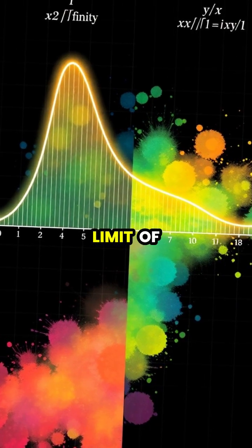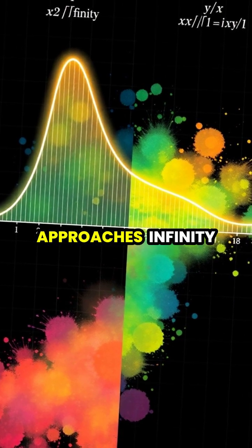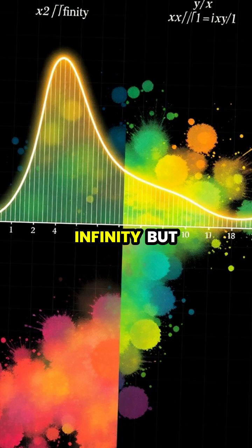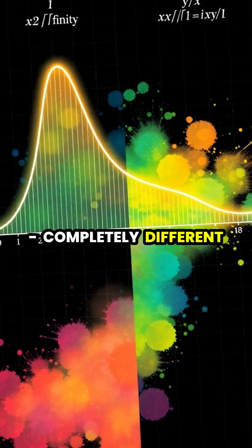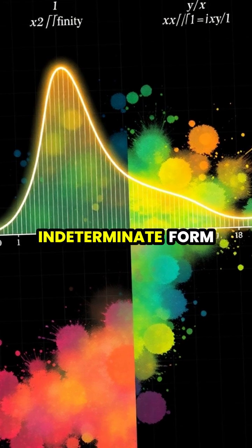For example, if we take the limit of x²/x as x approaches infinity, we get infinity. But if we take x/x, we get one, completely different answers from the same indeterminate form.